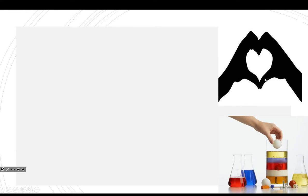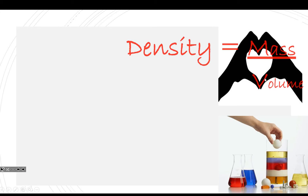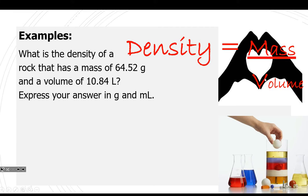The next part has to do with density. Remember it because it's like a heart — mass over volume. So when given a problem, we need to do mass over volume. Density equals mass divided by volume: 64.52 grams divided by 10.84 liters. But this asks for it to be put in milliliters, so I need to do a conversion.